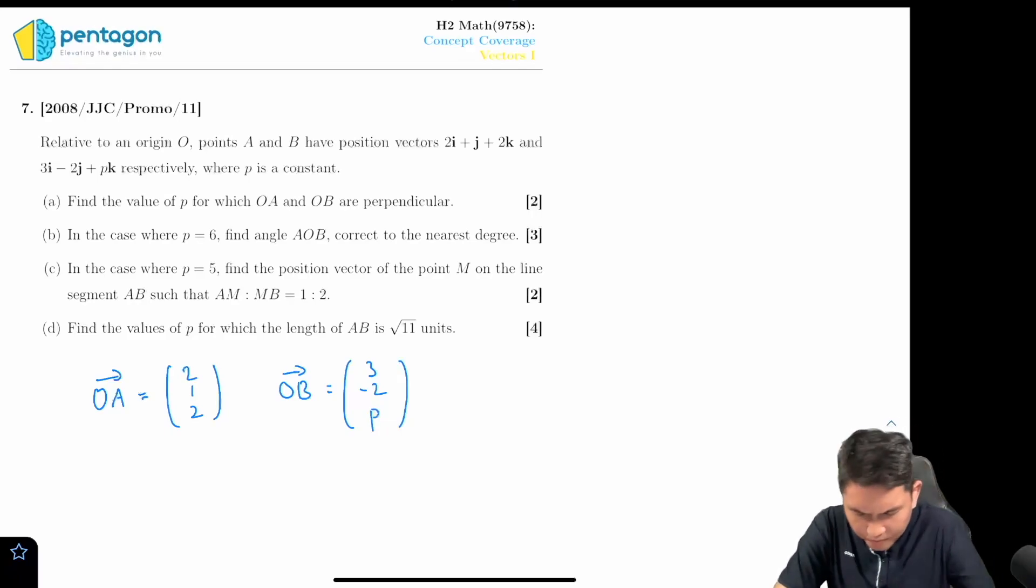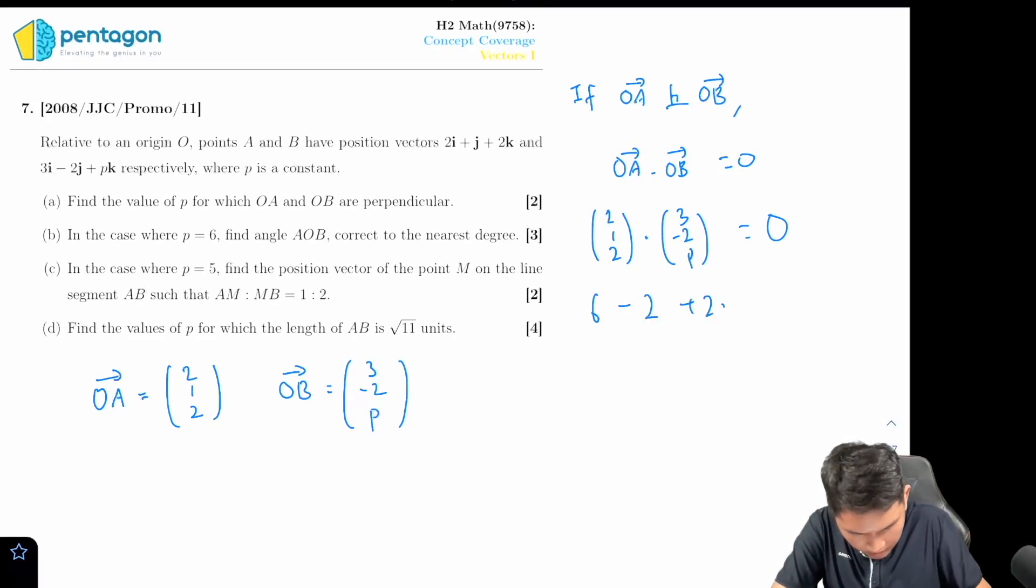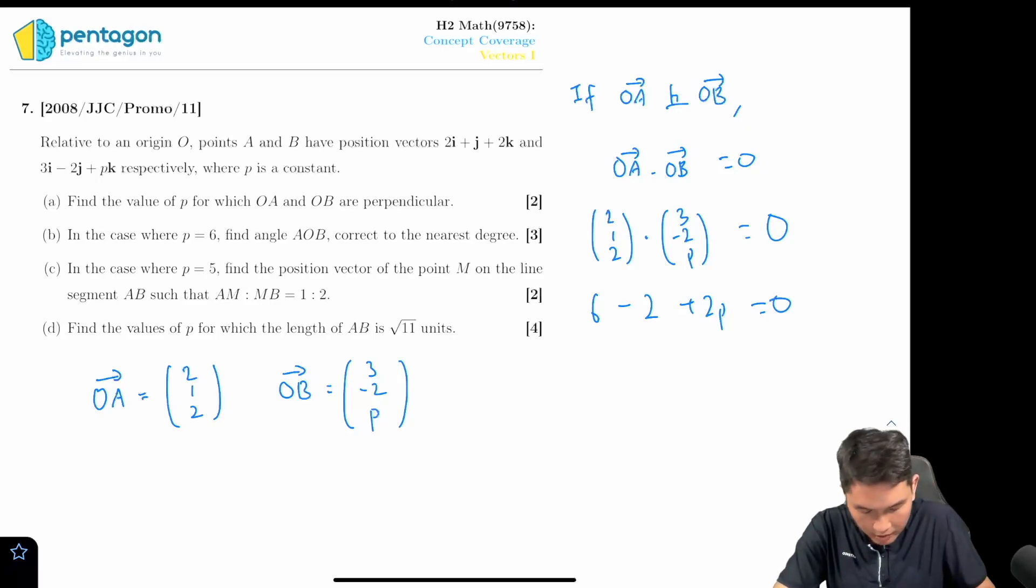As you know from the previous video, we can use dot product to check for perpendicularity. So if OA and OB were to be perpendicular, that means that OA dot OB is equals to zero. And then taking the products of each of the elements and I'm going to make p the subject of the formula, and therefore p is equals to negative two. That's the answer for part a.